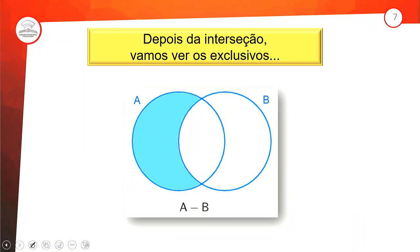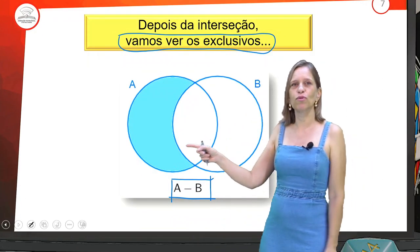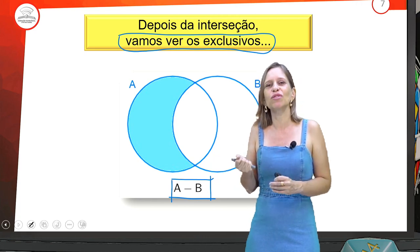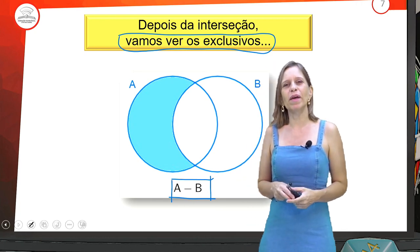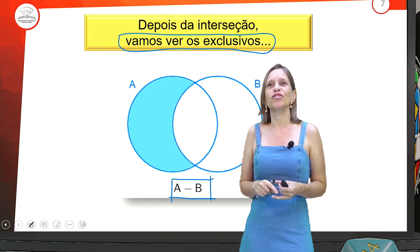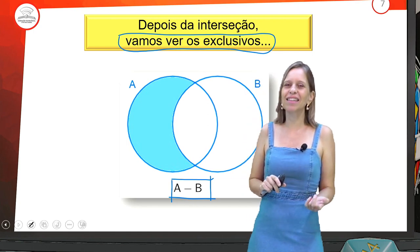Depois da interseção, a gente vai ver os exclusivos — a diferença, a subtração: A menos B e B menos A. A menos B é simplesmente pegar tudo que tem em A e tirar todo o B. Vai sobrar essa meia-lua — é o conjunto A retirando os elementos do B. A diferença também pode ser chamada de complementar. Lembrem que A menos B é completamente diferente de B menos A.